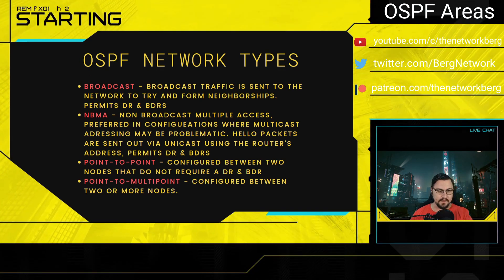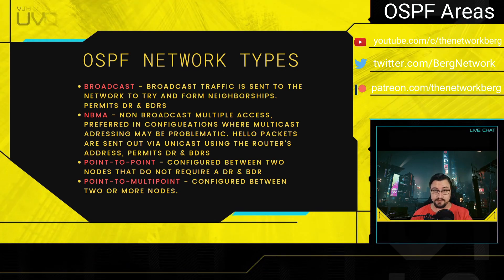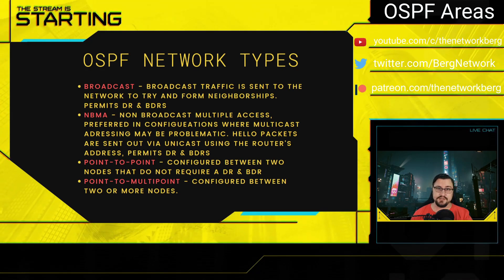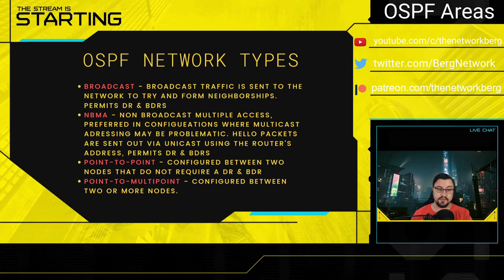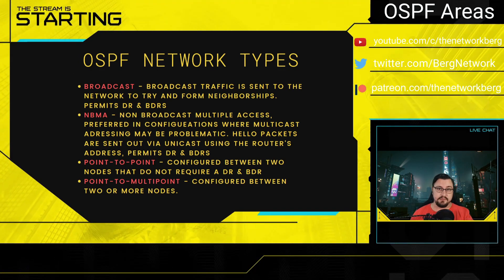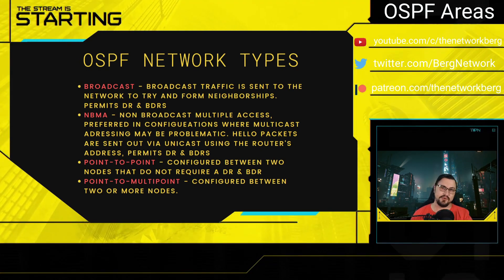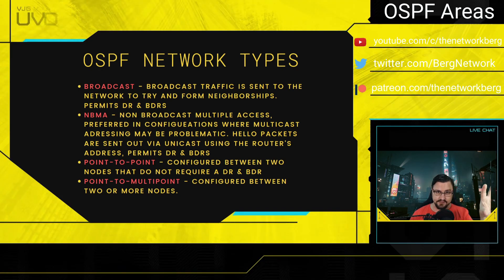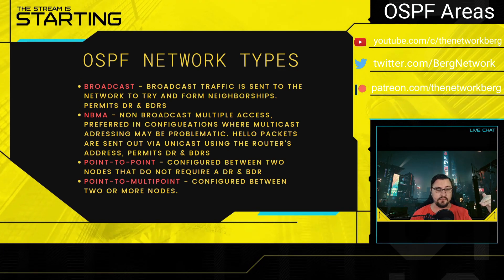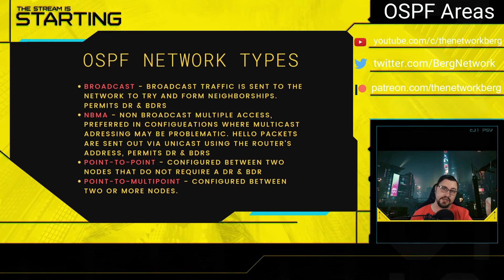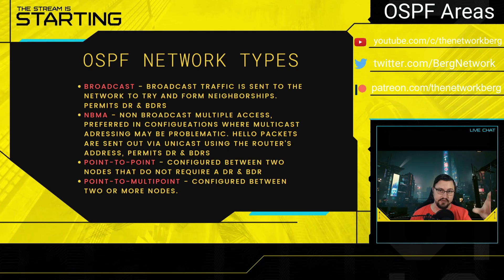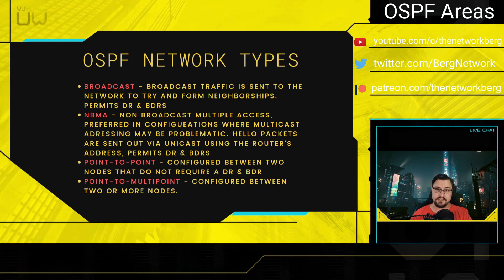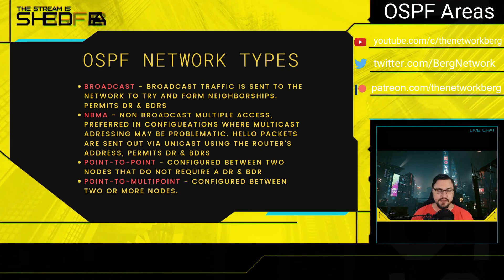The DR is responsible for sending updates to the rest of the network to keep the map updated so all devices don't have to scramble. Then we also have point-to-point or point-to-multipoint network types. These connect to a single point or perhaps a bunch of CPEs connecting to a provider edge router — that might be considered point-to-multipoint. Similarly, if you're a WISP with towers all connecting to a central point, that could also be a point-to-multipoint configuration.